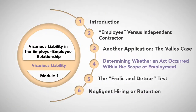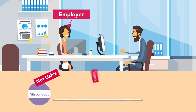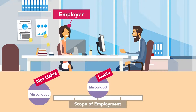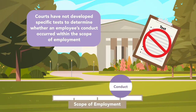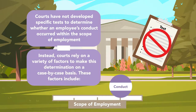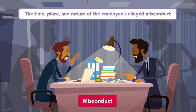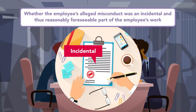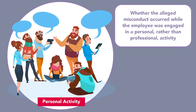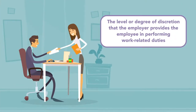Determining whether an act occurred within the scope of employment. Even if an agent is deemed an employee, an employer will not be liable for the employee's misconduct unless it occurred within the scope of employment or was a reasonably foreseeable consequence of that employment. Courts rely on a variety of factors to make this determination on a case-by-case basis. These factors include the time, place, and nature of the employee's alleged misconduct; whether the alleged misconduct was related to the work the employee was hired to perform; whether the alleged misconduct was an incidental and thus reasonably foreseeable part of the employee's work; whether the alleged misconduct occurred while the employee was engaged in a personal rather than professional activity; and the level of discretion that the employer provides the employee in performing work-related duties.